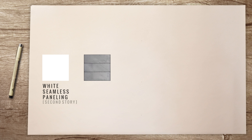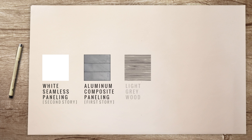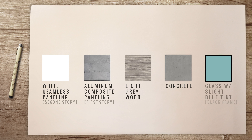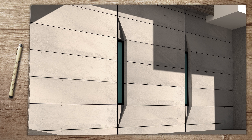Taking a look at the materials: we have white seamless paneling on the second floor to create those white volumes, aluminum composite paneling on the first story, and light gray wood horizontal pieces. Then we have the concrete pieces — the vertical element and the piece to the right — and the glass has a slight blue tint with black frames.